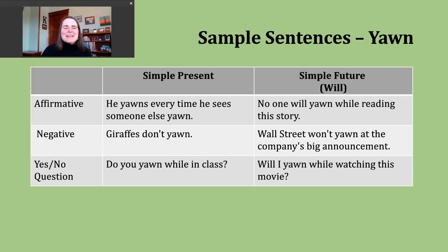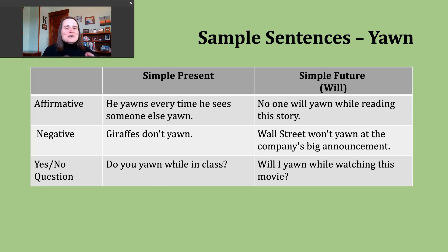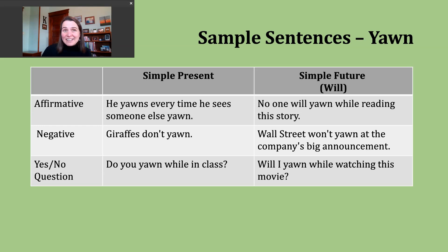Now let's talk about making a yes-or-no question in the simple present. To do this, we start with do or does — whichever form matches our subject — then that subject comes next, and then we use the base verb. Notice I'm not adding an S to the end of the verb. The only time I add an S is in affirmative sentences when the subject is he, she, or it. Here's my last simple present example: 'Do you yawn while in class?' — a question about your habit or routine.